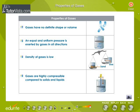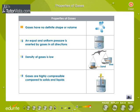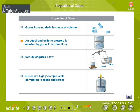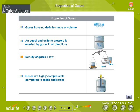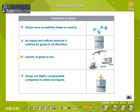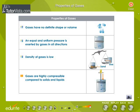Properties of gases: gases lack definite shape and volume. Gas molecules exert equal and uniform pressure in all directions. The density of gases is lower than that of solids or liquids. The number of molecules per unit volume is very small compared to solids and liquids. Gases are highly compressible compared to solids and liquids.